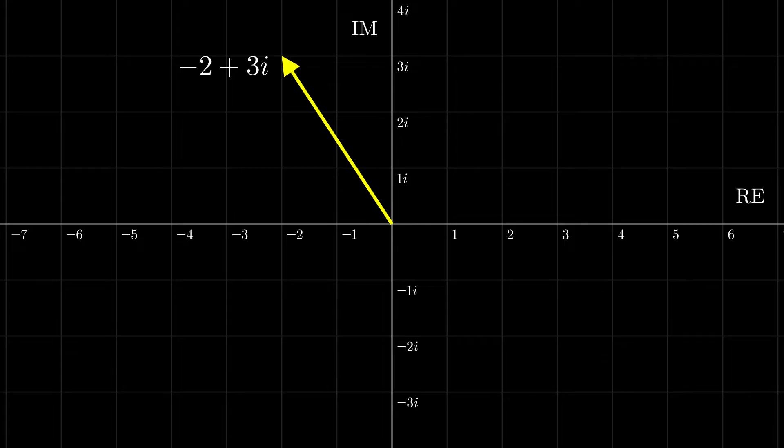When we represent a complex number on the number plane like this, we also uncover another property, its magnitude, which is its distance from the origin. This is denoted with vertical lines and is calculated by using Pythagoras' theorem.